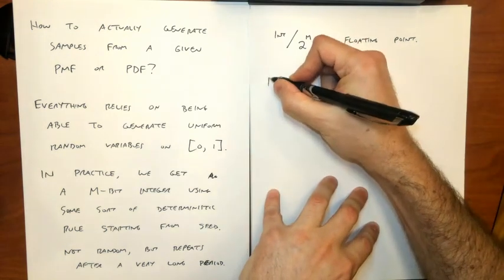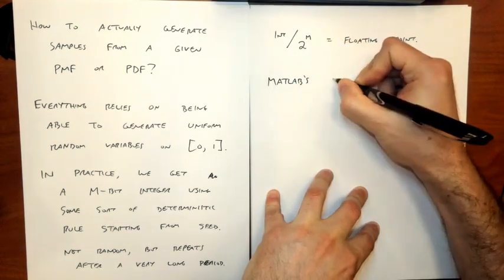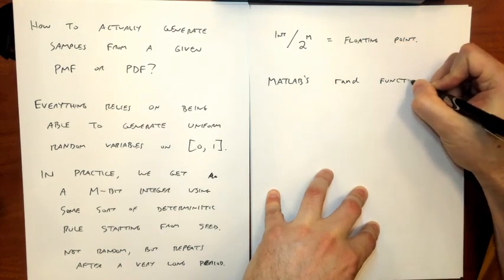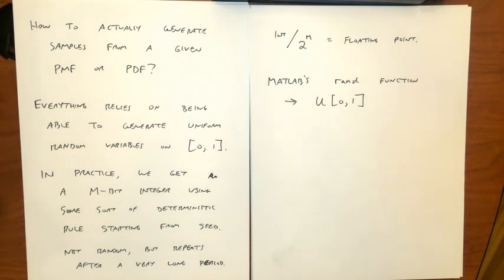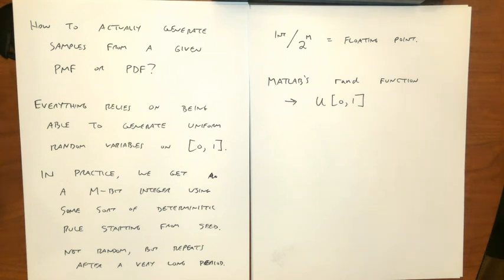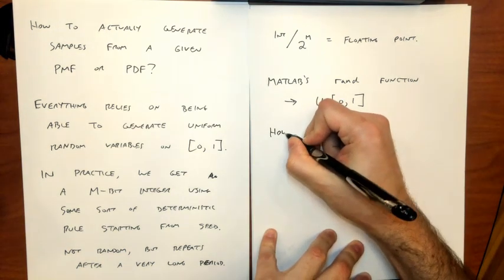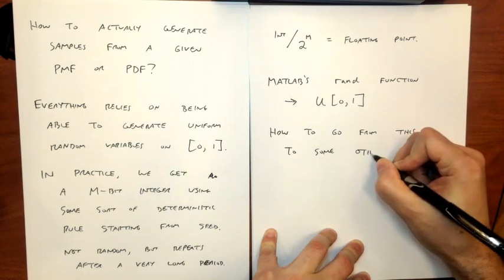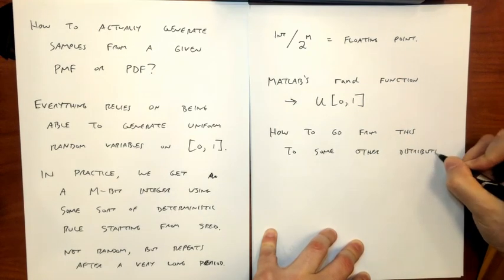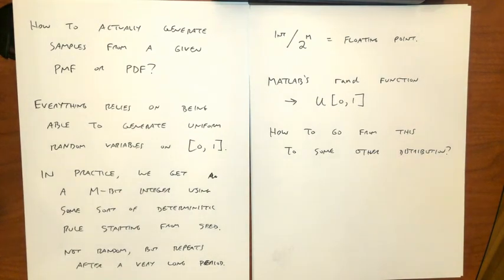MATLAB's rand function generates a random number in the uniform range between zero and one. So how can I bootstrap that to go from this basic distribution to any distribution I want? The easiest way is via the CDF. Generating discrete random variables like binomial is easy.